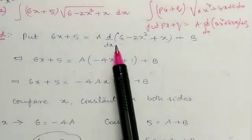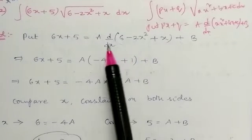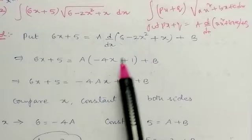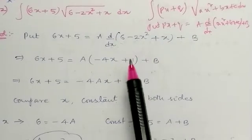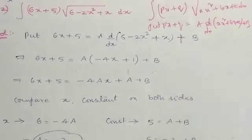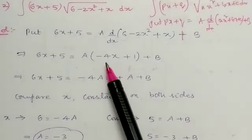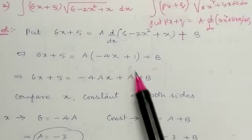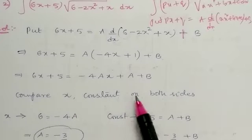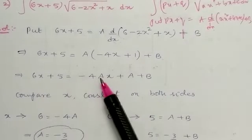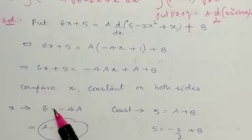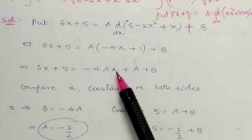Now find its derivative. A into derivative of (6 - 2x² + x): derivative of 6 is 0, derivative of -2x² is -4x, derivative of x is 1. So we get A into (-4x + 1) plus B. Multiply A inside: -4Ax + A + B. Compare x and constant on both sides.